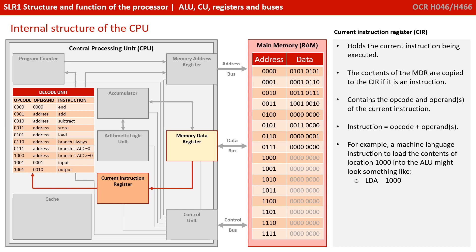The next register is the current instruction register. As the name suggests, this holds the current instruction actually being executed. The contents of the memory data register are copied to the current instruction register if it is an instruction. It contains two things: an op code and an operand, and together these make the instruction. For example, a machine language instruction to load the contents of memory location 8 — so in binary that's 1000 — into the ALU, may look something like LDA 1000.